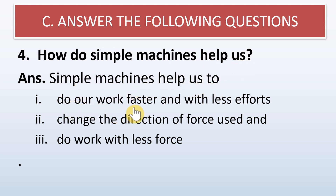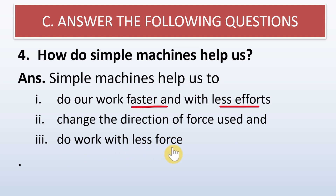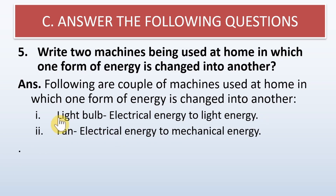How do simple machines help us? Simple machines help us to do our work faster and with less effort. They change the direction of the force used and allow us to do work with less force. We need to apply less force with the help of simple machines, and that is why they are so useful.